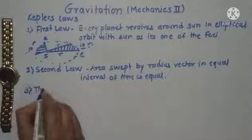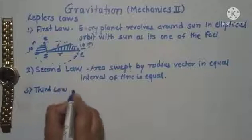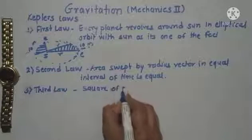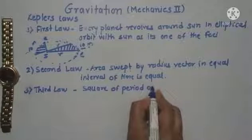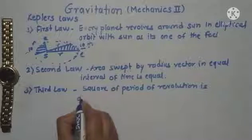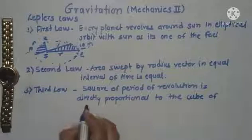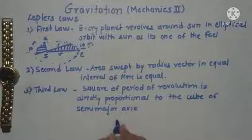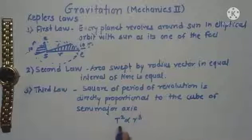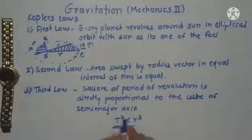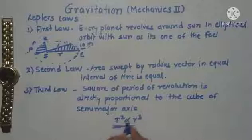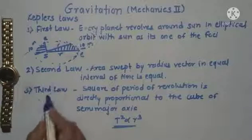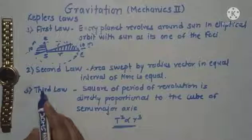The third law says that the square of the period of revolution T is directly proportional to the cube of the semi-major axis R — that is, T² is proportional to R³. So Kepler's three laws are very useful in understanding planetary motion.